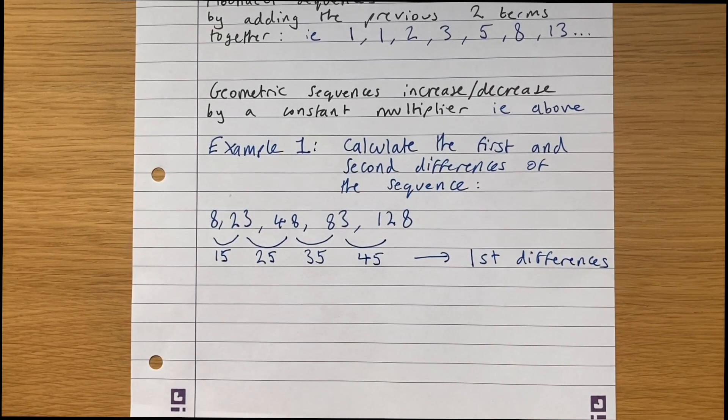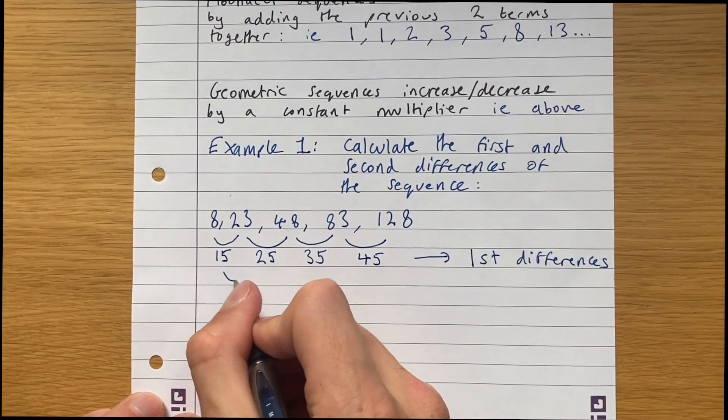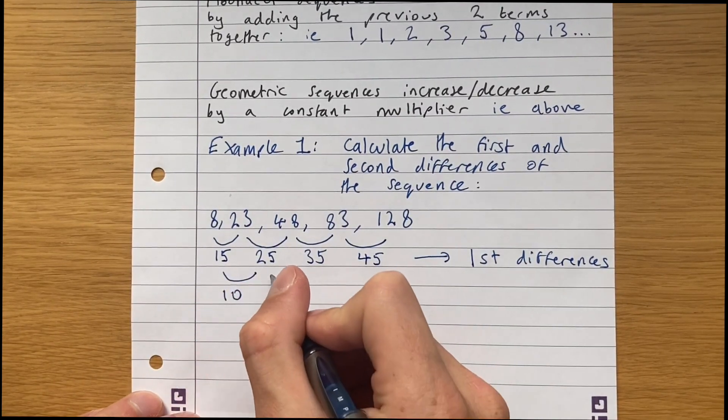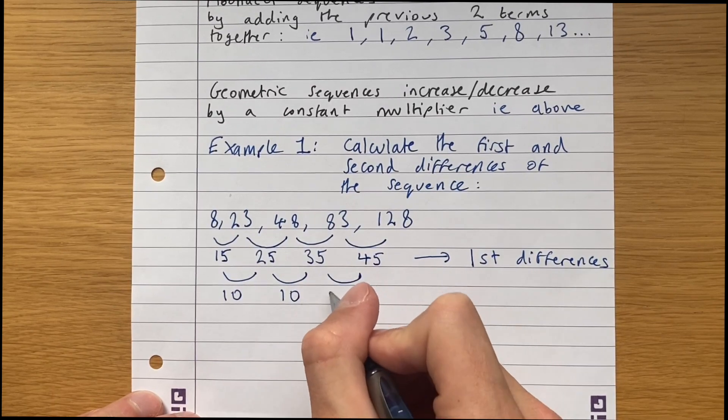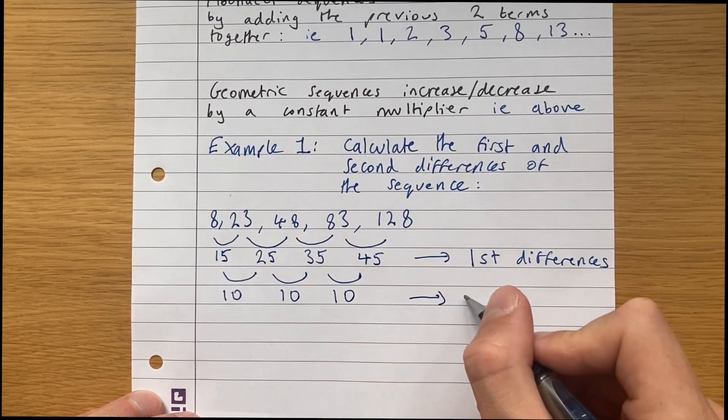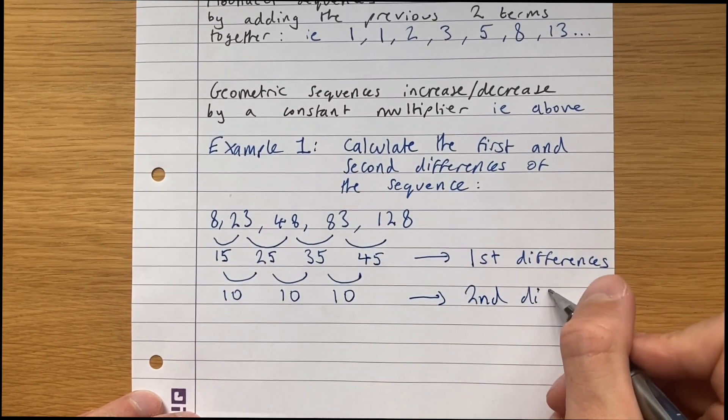And the second differences are just the differences between the first differences. So the difference between 15 and 25 is 10, 10, 10. Those are the second differences.